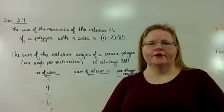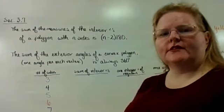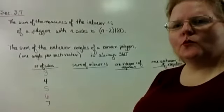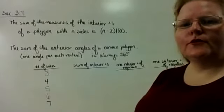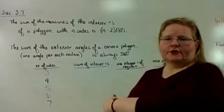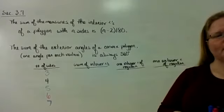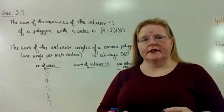Okay, today we're going to do section 3.7. Section 3.7 is all about the measures of the interior and exterior angles of polygons.